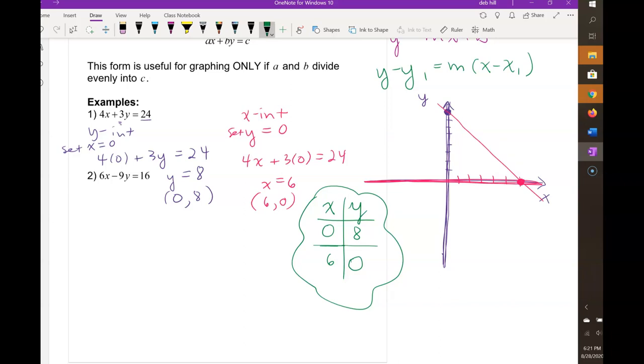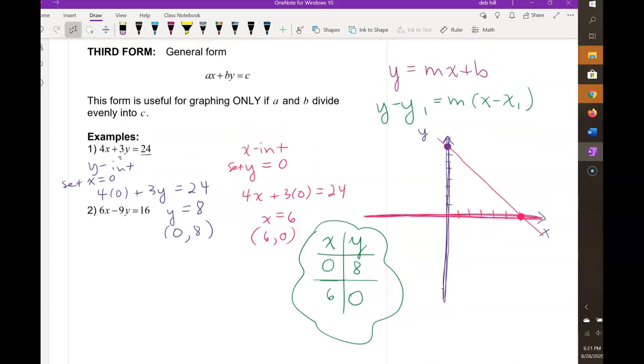In the second example, you can see that it's not true that a and b divide evenly into c. In fact, 6 doesn't divide evenly into 16, and negative 9 doesn't divide evenly into 16. So for this one, you're going to need to solve for y to be able to draw the graph.